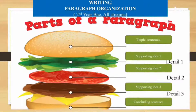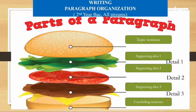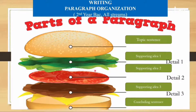These are the parts of the paragraph — like a sandwich! We have the topic sentence as the base, then supporting idea one, supporting idea two, supporting idea three — like the tomatoes — each with its own detail to explain it, and the concluding sentence on top. All the parts are very important to constitute a delicious paragraph.